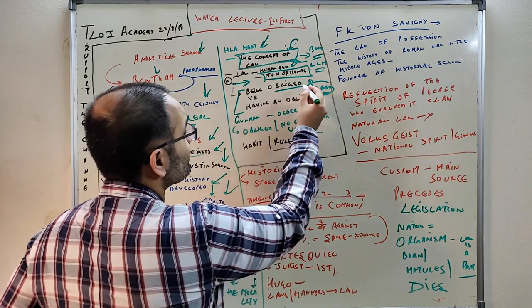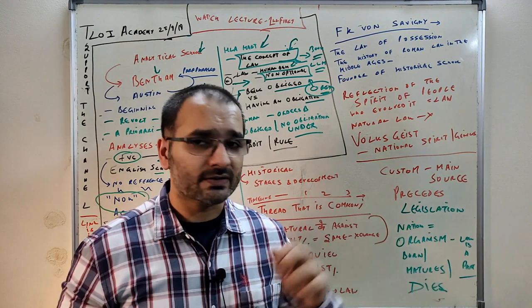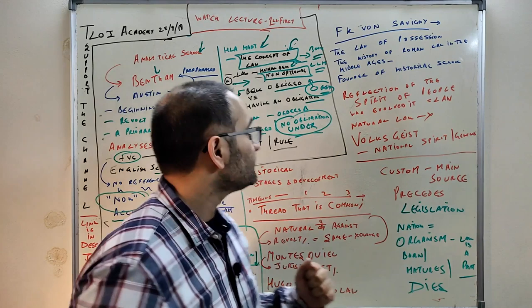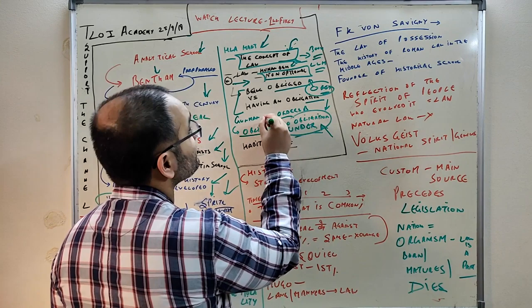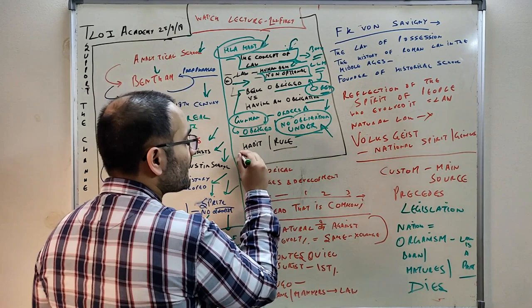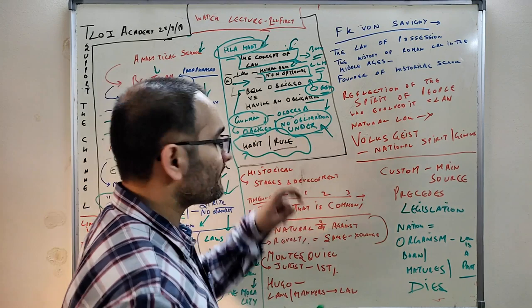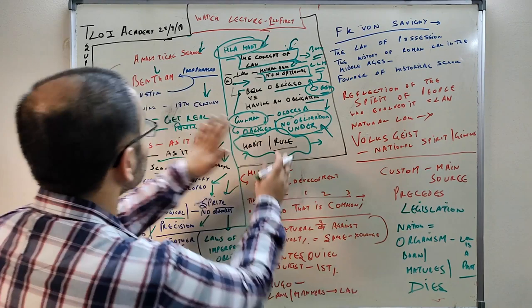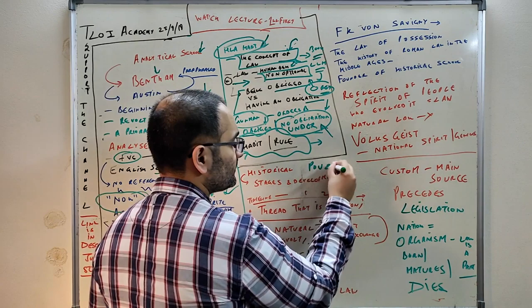Hart was concerned with Austin's concept of obedience but refined it further. There are two concepts: being obliged versus having an obligation. For example, if a gunman orders you, you are not under an obligation but you are obliged. Hart went into the core theory of obedience. If you quote this gunman example in your exam, you'll get good marks. He also distinguished between habit and rule, which your professor will explain in detail in class.